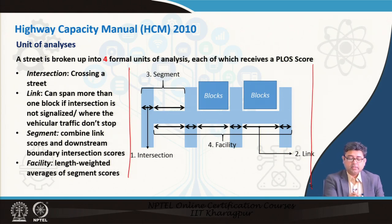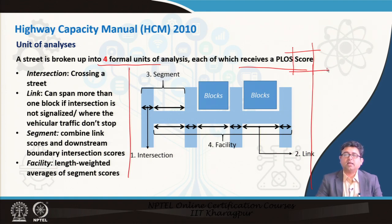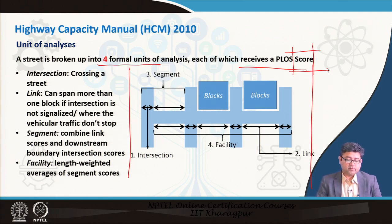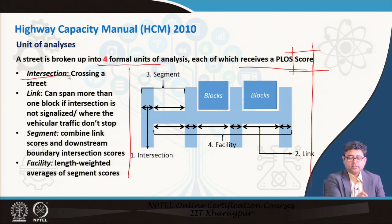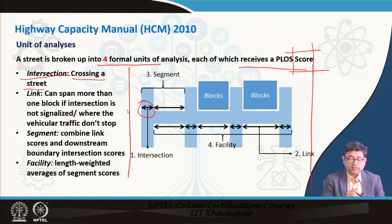In this analysis the entire analysis segment is divided into separate units, and there are formally four units of analysis, each of which receives a PLOS score. That score is then converted into a scale of A, B, C, D, E to give you the pedestrian level of service. The first unit is the intersection — the crossing of any street.